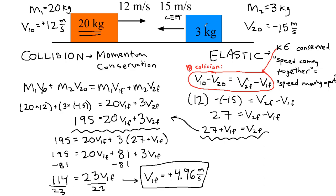This smaller mass, on the other hand, is probably going to be bounced back quite quickly because the kinetic energy is conserved and this one has lost a lot of it. So now we plug it back into here, 27 plus 4.96 is equal to V2F. And so we get 31.96 positive meters per second is equal to V2F.